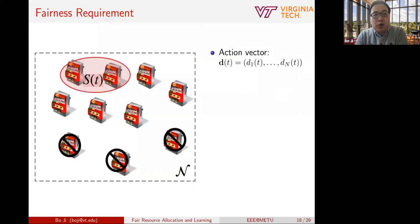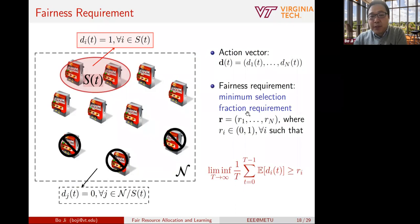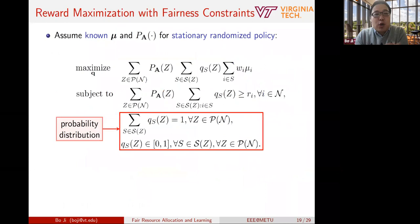Next, the fairness requirement. We use D(t) to denote the action vector, where D_i(t) equals one if arm i is selected and zero otherwise. We have a minimum selection fraction requirement, also called an exposure requirement: in the long run, each arm must be selected at least a certain fraction of the time. That is specifically the fairness requirement we look at in this problem.